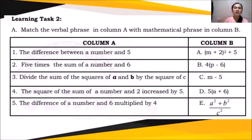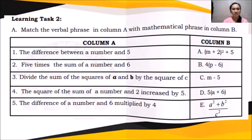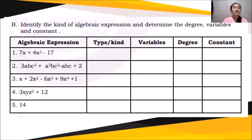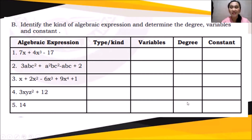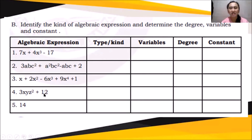Now we can answer learning task number two. For letter A, match the verbal phrase in column A with the mathematical phrase. For letter B, identify the kind of algebraic expression — monomial, binomial, trinomial, or polynomial — and determine the degree, the variables, and the constants of every given algebraic expression.